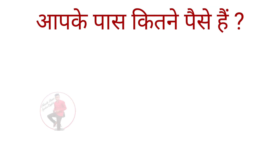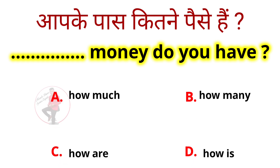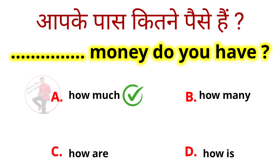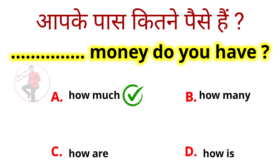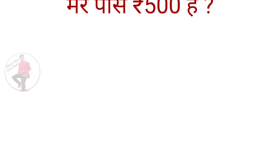Aapke paas kitne paise hain — blank money do you have? Options: how much, how many, how are, how is. The correct answer is 'how much' — How much money do you have? Money is uncountable, so 'how much' is used, not 'how many.'